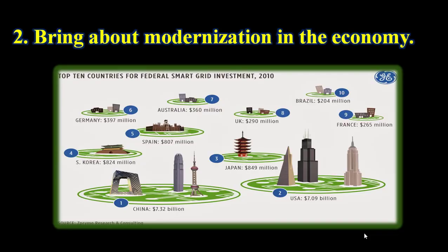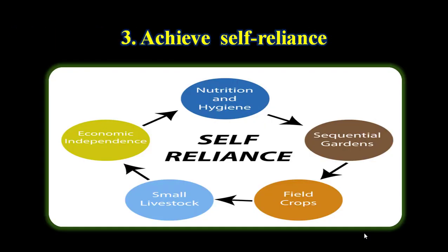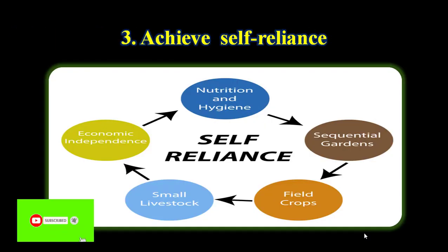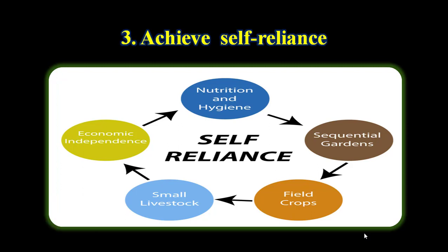The second objective is to bring about modernization in the economy. Indian planning aimed at modernizing to enhance its capacity to produce more goods and services. The third objective is to achieve self-reliance. India was dependent on other countries for most requirements, especially technology, food, and fuel. In order to avoid foreign intervention in domestic policies, planners emphasized reduction of imports by promoting domestic production. India has somewhat achieved self-sufficiency in producing its own food, technology, and fuel.